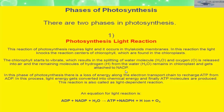In the light-dependent reaction phase, there is loss of energy along the electron transport chain to recharge ATP from ADP. Light energy gets converted into chemical energy, and ATP molecules are produced. The equation of the light reaction is: ADP + NADP⁺ + H₂O → ATP + NADPH + O₂.